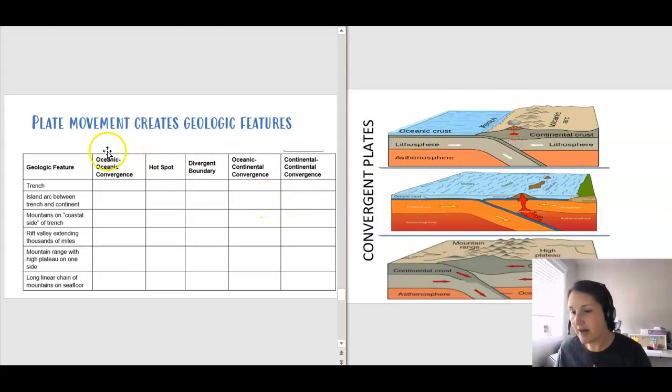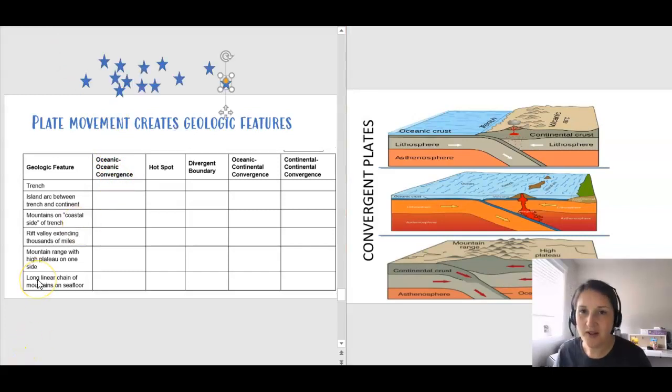Let's take a look first at an oceanic-oceanic convergence. We'll kind of jump around a little bit, but we'll complete each column in the chart together. In an oceanic-oceanic convergence, like we see over here, we have an oceanic plate and another oceanic plate. Let's see what things are forming. Do we see a trench? Yes, I see a trench right here in that diagram. I added some stars to our chart here so we can drop the stars in place as we identify each feature. We have a trench at the oceanic-oceanic convergence.